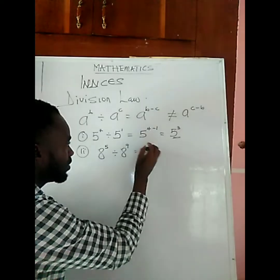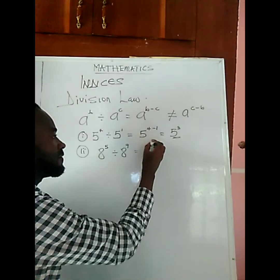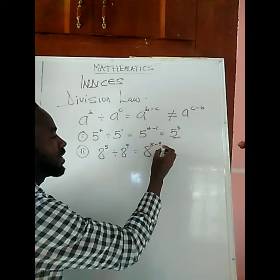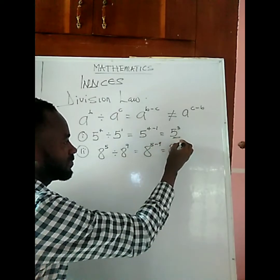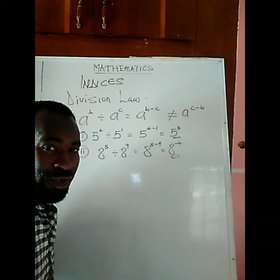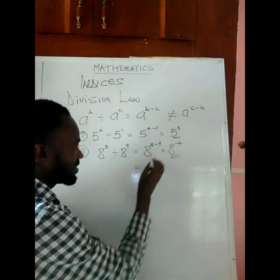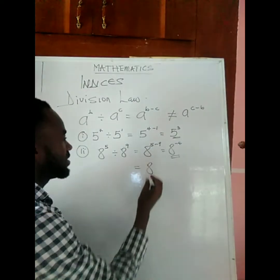We take the common base and then we subtract the powers, 5 minus 9, and that gives us 8 to the power of negative 4. This is our answer.